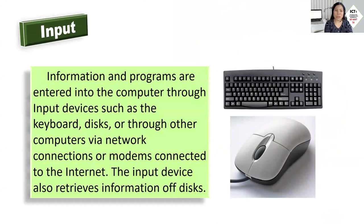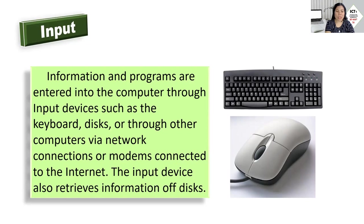First, we have what we call input. The computer is capable of performing input operations. Using the mouse and keyboard, the things we enter into the computer are received and processed by the computer in order for it to produce meaningful output or information. When we say input, information and programs are entered into the computer through input devices such as the keyboard, disks, or through other computers via network connections or modem connected to the internet. The input device also retrieves information from disks — you use the mouse to open a drive or a file.